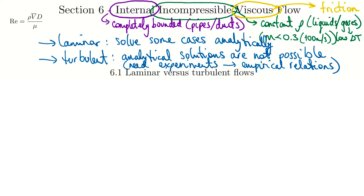Let's dive into section 6.1: laminar versus turbulent flow. The best way to discuss this is by looking at videos of a setup very similar to what Reynolds ran when he first determined the Reynolds number and discovered laminar and turbulent flows. Before flipping to the videos, I want us to have the Reynolds number in mind: Re = ρV̄D/μ. The V has a bar over it indicating average velocity, because for internal flows there is a velocity difference across the radius of the pipe.